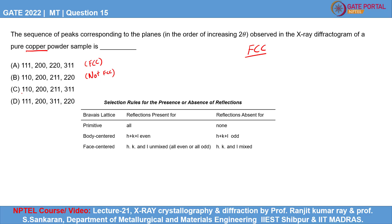In case of option C, again it is also a case of H, K, L as mixed, so it is also not FCC. While option D represents 111 and 200, which are all unmixed — meaning either all of them are even or all of them are odd — so these peaks also represent an FCC crystal structure.